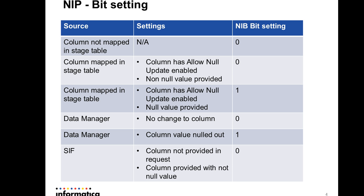One important point to note: the NIP value for a corresponding column will only be calculated when it is mapped in the stage table. There is a key difference between passing a null value to a column and not passing any value at all. Not passing a value means this column has not been provided by the source system, whereas passing a null value means the column was provided by the source system but the incoming value is null.